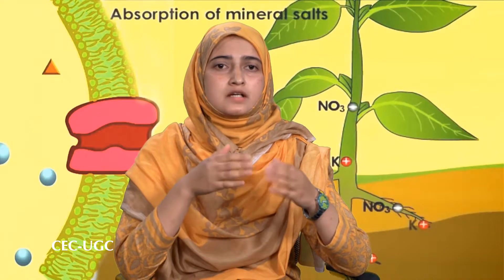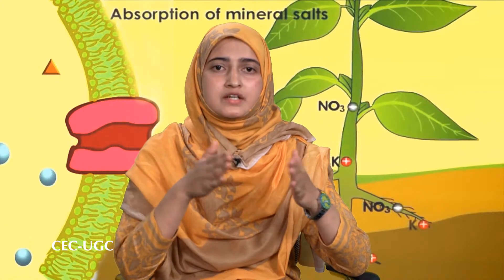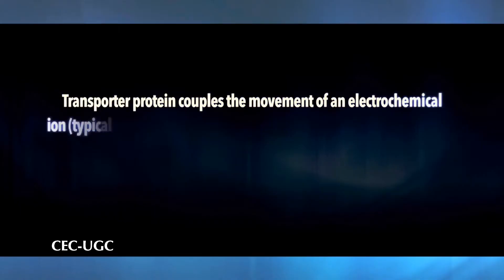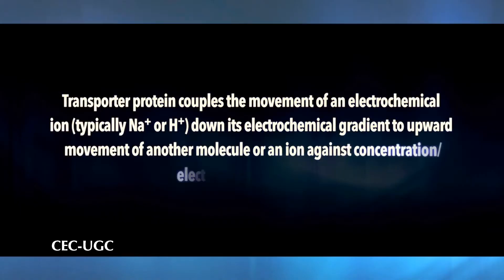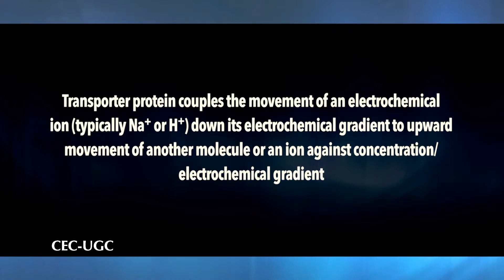Secondary active transport is a kind of active transport that couples endergonic (uphill) transport of one solute to the exergonic (downhill) flow of another solute that was originally pumped uphill by primary active transport. It takes place across a biological membrane where a transporter protein couples the movement of an electrochemical ion — typically Na+ or H+ — down its electrochemical gradient to the upward movement of another molecule or ion against a concentration or electrochemical gradient.